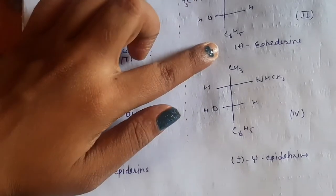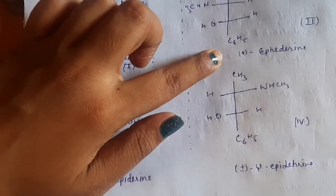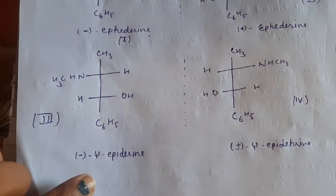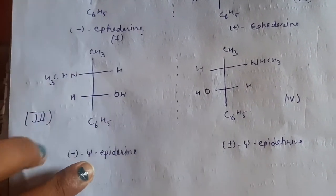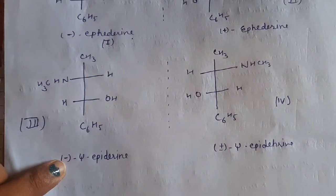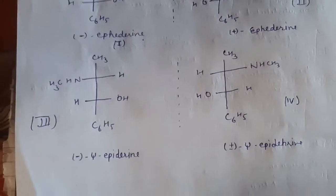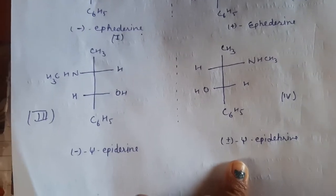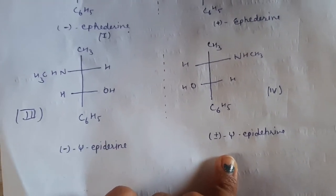And if we talk about its specific rotation so these two will have plus minus 6.3. And the specific rotation value for this pseudo ephedrine is for this one minus 51.2 degrees and for this one plus 51.2 degrees. So this is all about ephedrine.